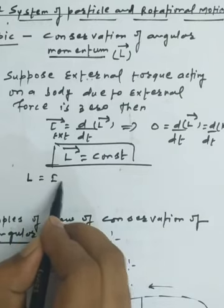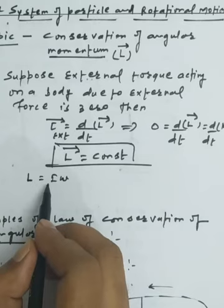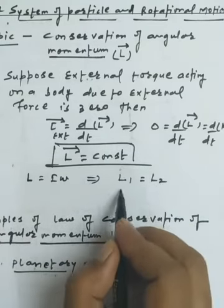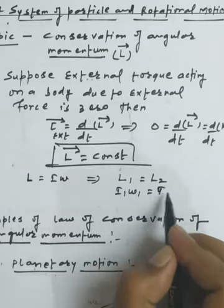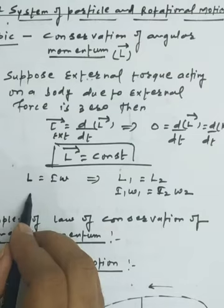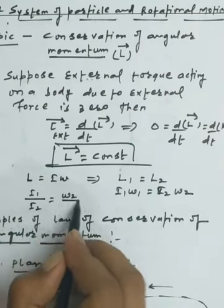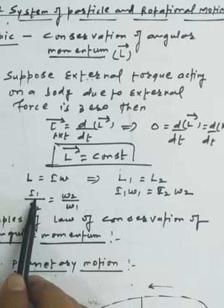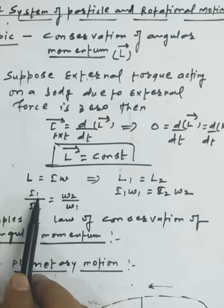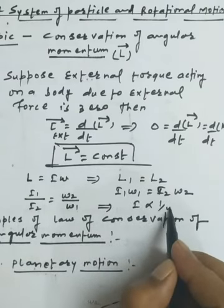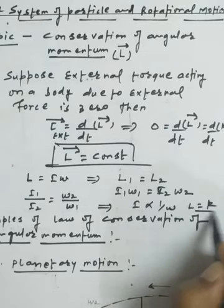Using the basic relation L = Iω, and assuming angular momentum is conserved, we can compare: L₁ = L₂, which means I₁ω₁ = I₂ω₂. From this, I₁/I₂ = ω₂/ω₁. Whenever the moment of inertia I is large — meaning particles are farther from the axis of rotation — the angular velocity ω is small. So I is inversely proportional to ω when L is constant.